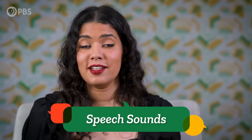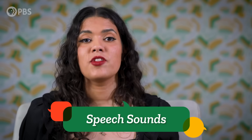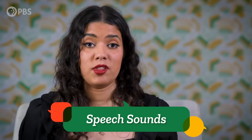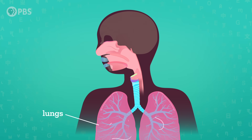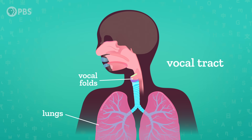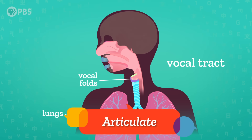Speech sounds don't include coughing, sneezing, or belching. They're the sounds that spoken languages combine with each other to make words. While there are a finite number of speech sounds, we can use them to make an infinite number of words. To understand speech sounds, we first need to understand how the human body produces them. We start with the lungs, which push air up through the vocal folds, also known as the vocal cords. Your vocal folds are thin membranes that sit across your throat and vibrate to make sound. This path, which moves from lungs to lips, is known as the vocal tract.